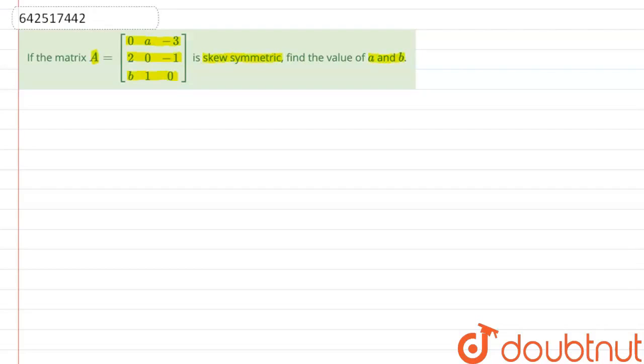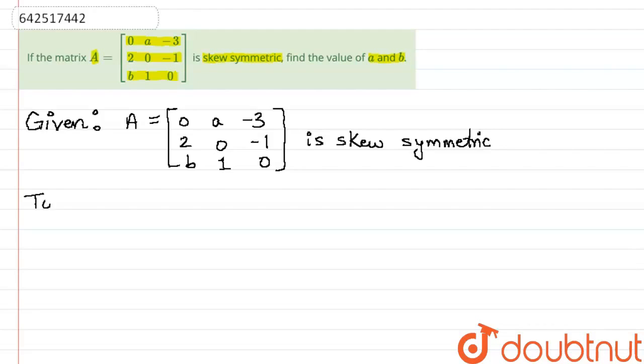We are given a matrix A that is 0, A, -3, 2, 0, -1, B, 1, 0. We are given that this matrix is skew symmetric. Now, we are supposed to find the values of A and B.